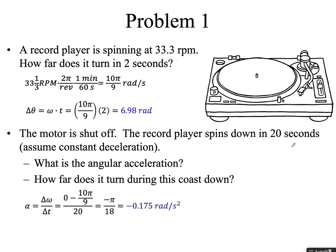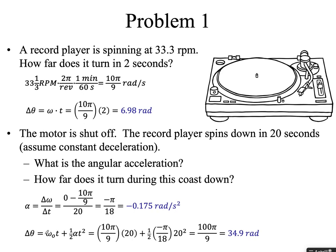How far does it turn during the coast-down? Using the rotational equivalent of delta x equals v₀t plus ½at², we plug in the initial angular velocity and the time, plus one-half the angular acceleration times time squared, giving approximately 34.9 radians.